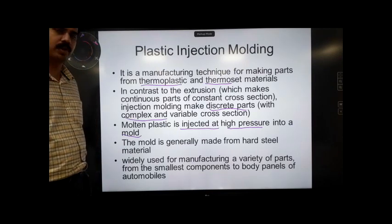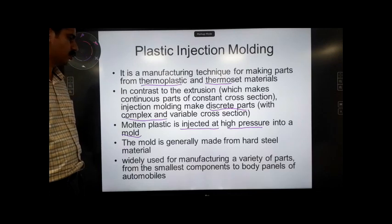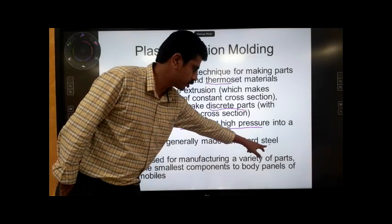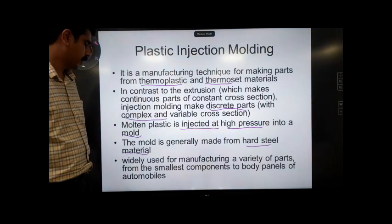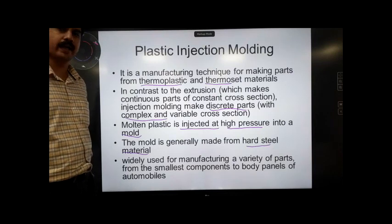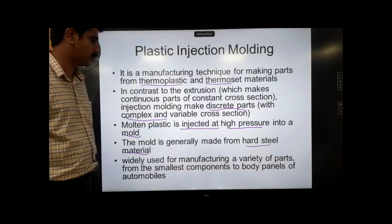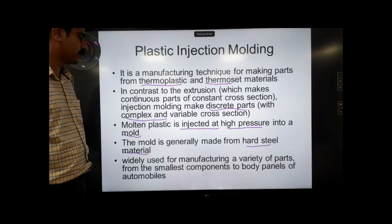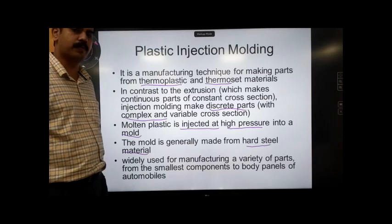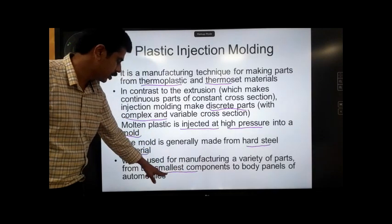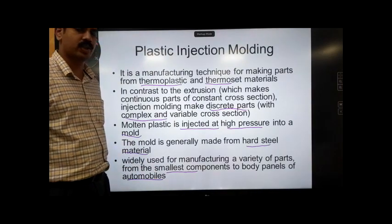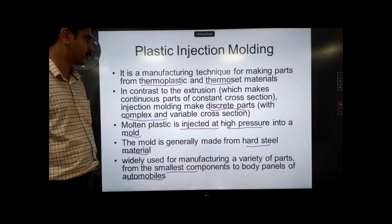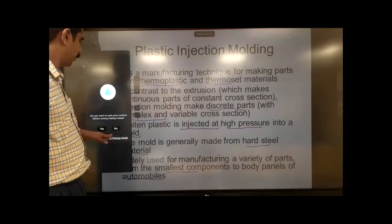The material used for making the mold is normally hardened steel. This process is widely accepted because it can be used for making a variety of parts — from very small components to body panels of automobiles. That means we can have variety not only in the shape but also in the size of the product, making this a very important process in plastic molding.